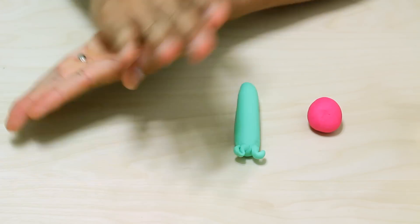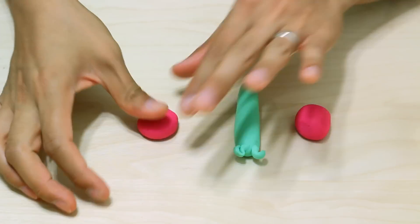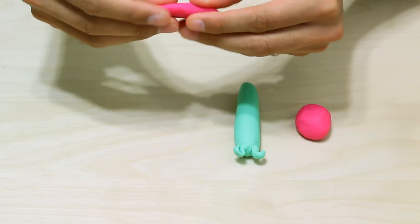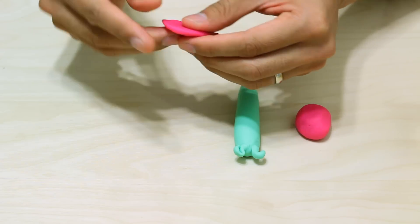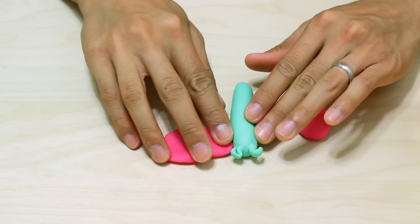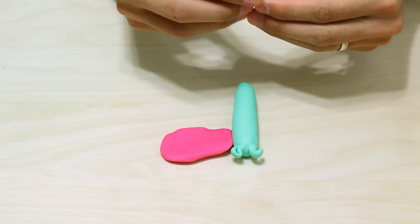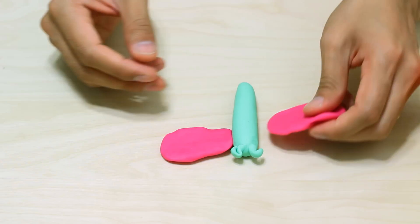And roll it into a ball first and I'm going to flatten it out to make the wings. Okay, there's one wing and here comes the second.